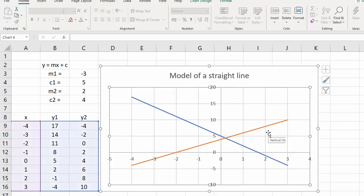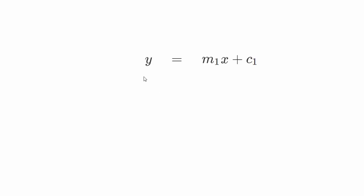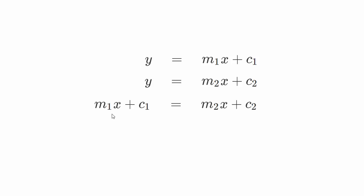So now we've got a model of two straight lines and we have an intersection. Now I'd like to do a little bit of algebra. Our first line is Y equals M1·X plus C1, and our second line is Y equals M2·X plus C2.